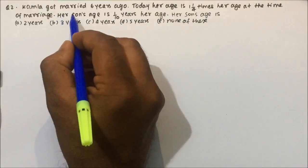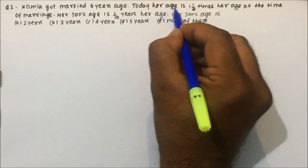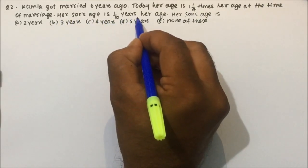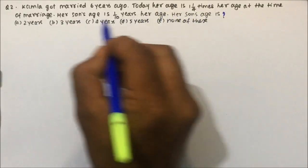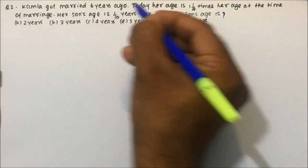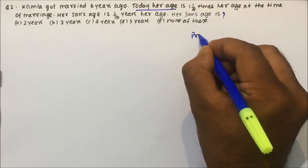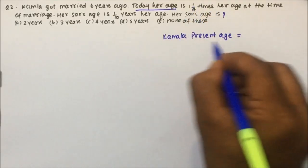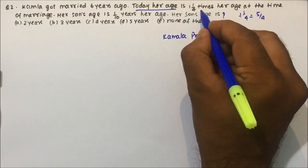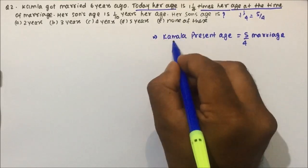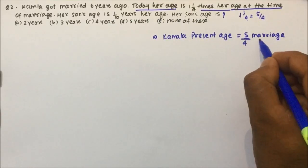Question number 2: Kamala got married 6 years ago. Today her age is 1 and 1/4 times her age at the time of marriage. Her son's age is 1/10 of her present age. We need to find her son's present age. 1 and 1/4 is nothing but 5/4. So Kamala's present age equals 5/4 of her age at marriage time. From this, the ratio of present age to age at marriage is 5 to 4.